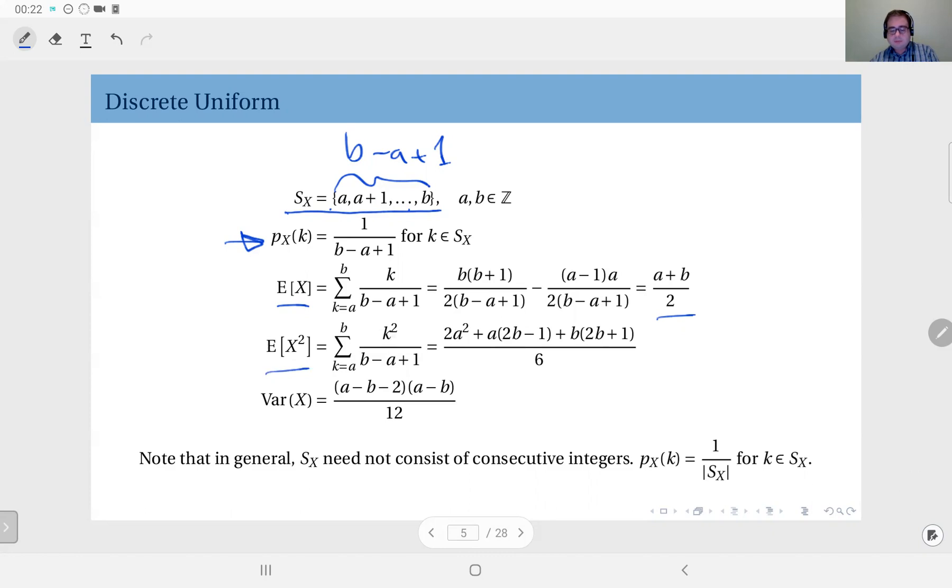And then of course, using these two, you can find the variance of this uniform distribution as this.